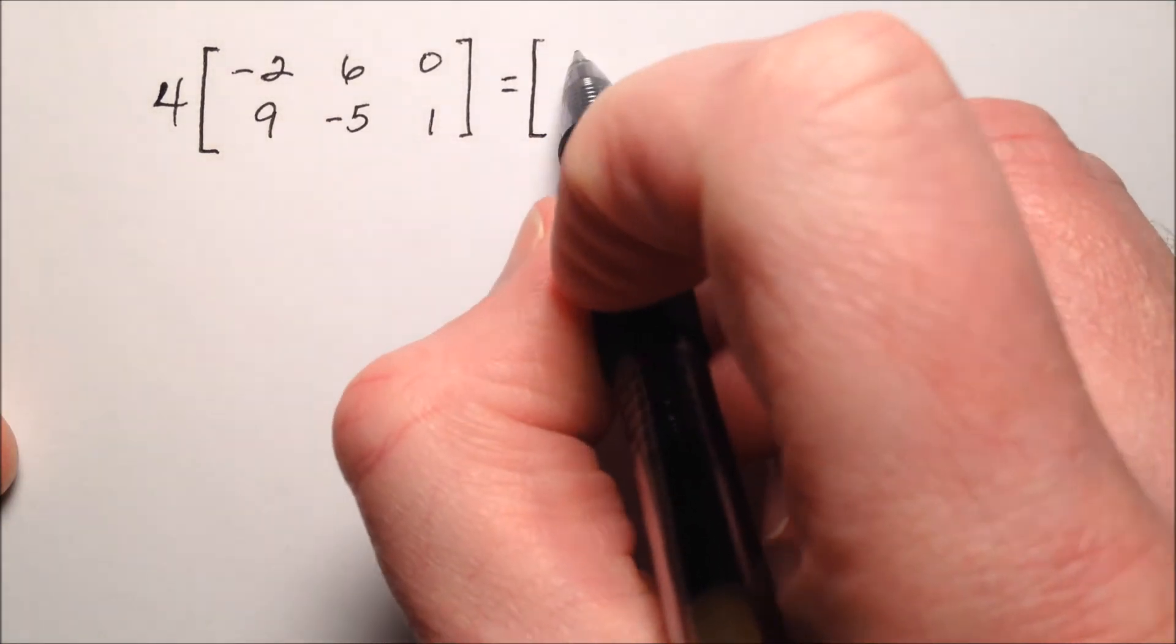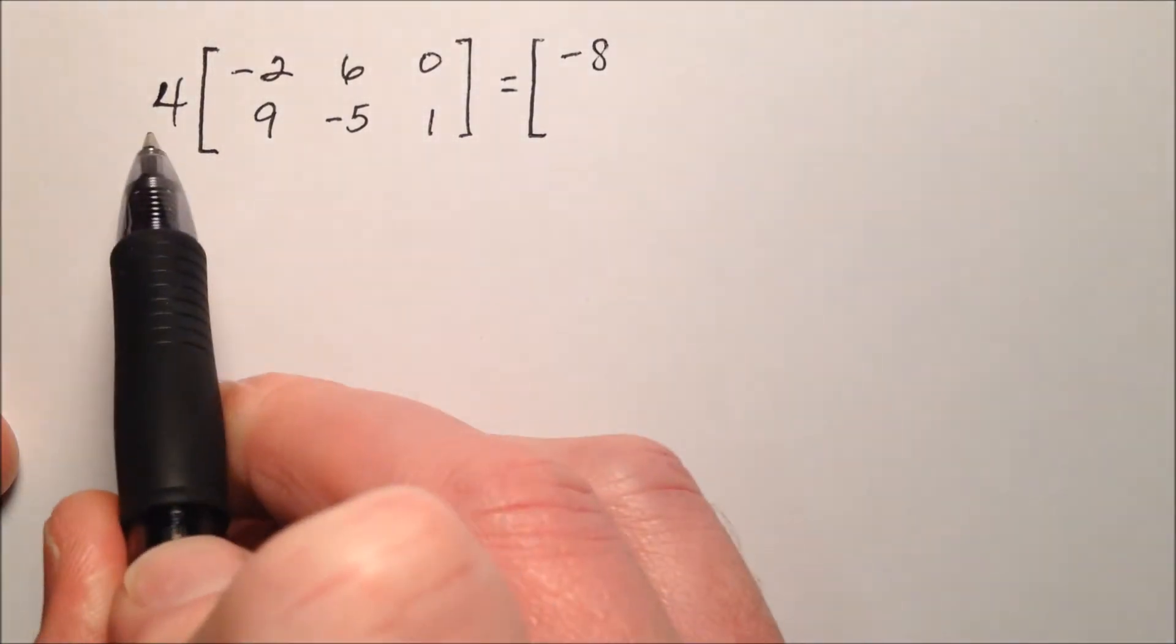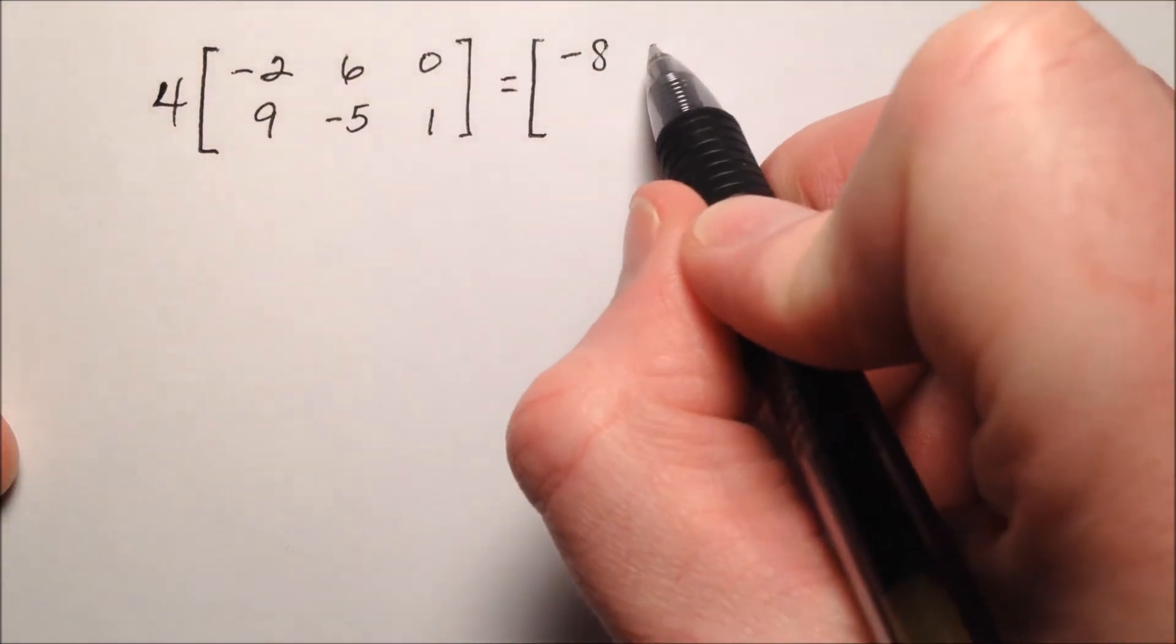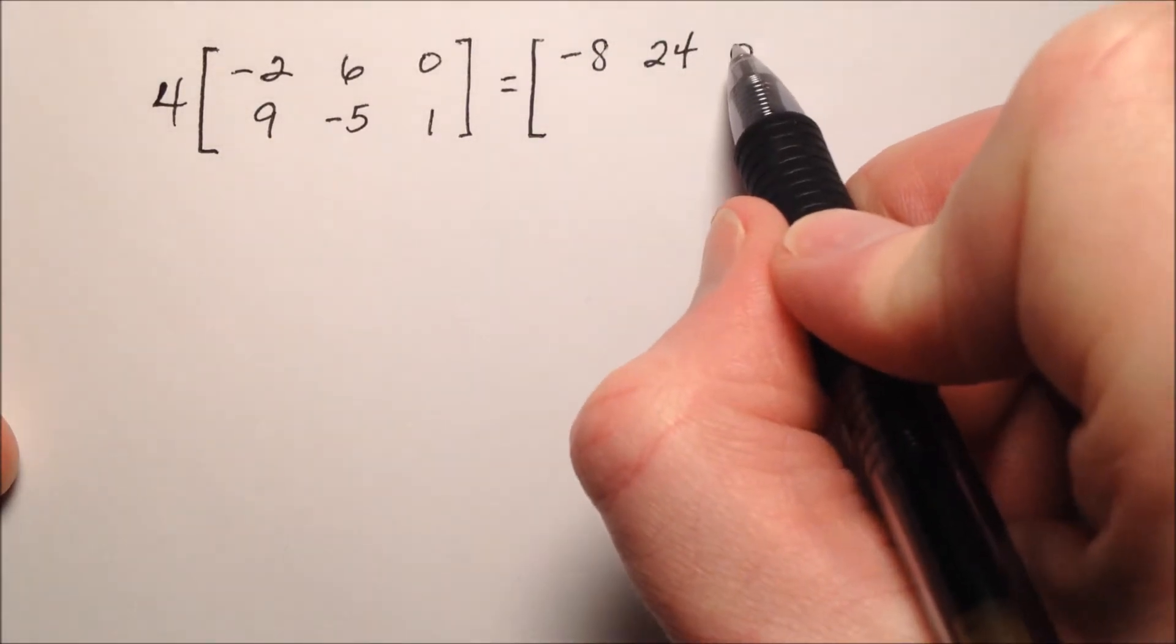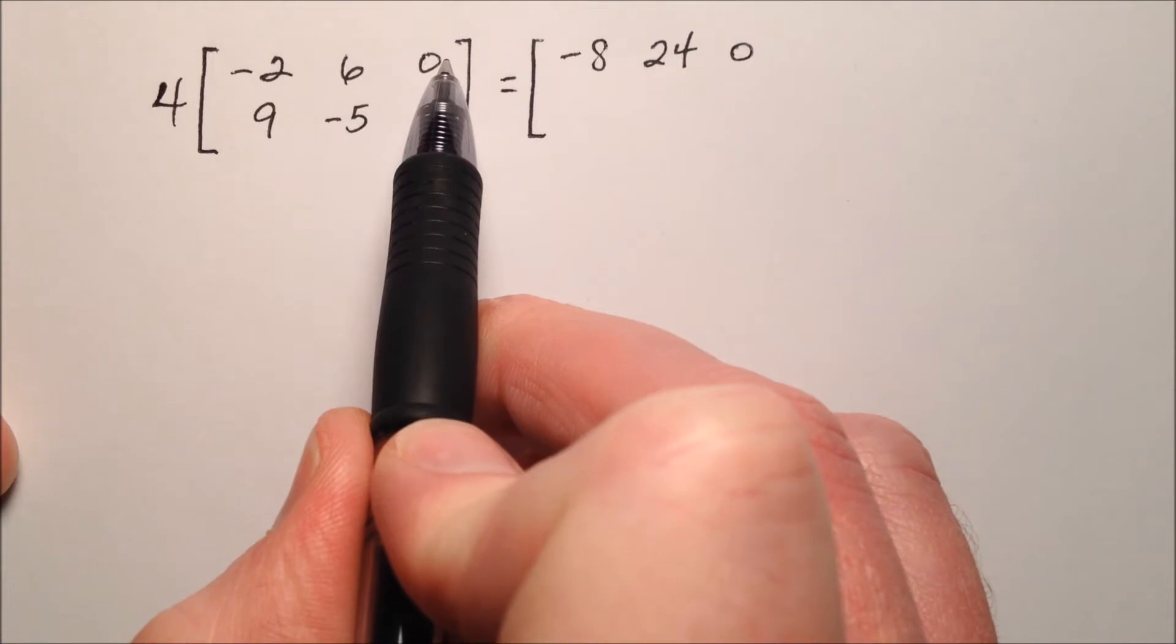So 4 times negative 2 is negative 8, 4 times 6 is 24, 4 times 0 will be 0. That's the first row.